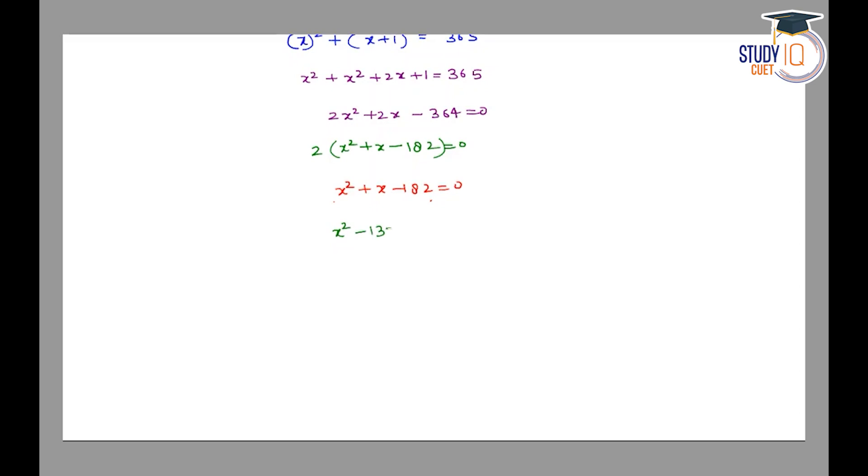Now we have x squared minus 13x plus 14x minus 182 equal to 0.